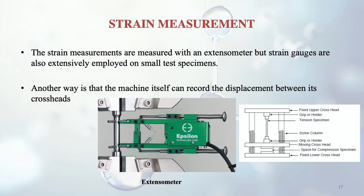Regarding stress and strain: stress is the resistance of a body when a force is applied to it. Strain is the elongation that results. Strain measurements are done with an extensometer, though strain gauges are also extensively employed for small test specimens. Another approach is that the machine itself can record the displacement between its cross heads.